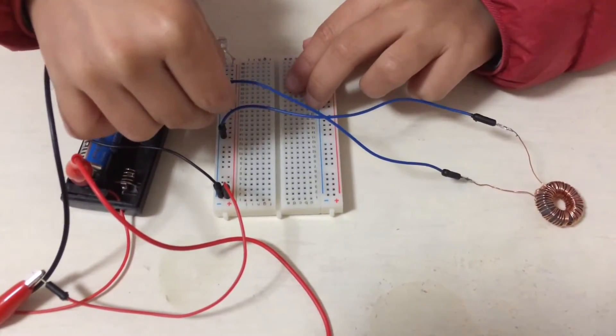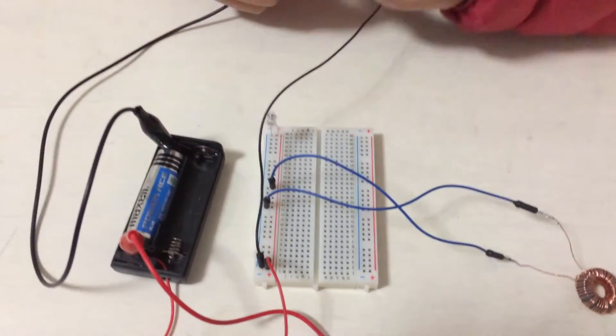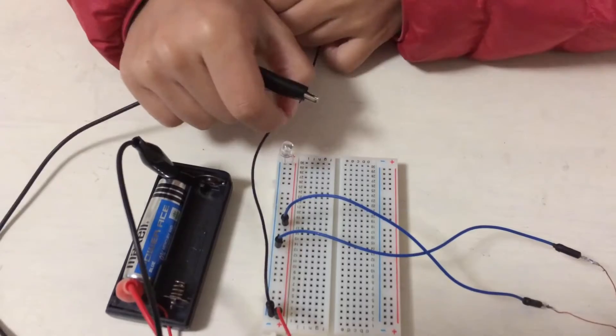When I disconnect the battery, the magnetic field collapses quickly and high voltage in the opposite direction is produced. This is sufficient to light up an LED briefly.